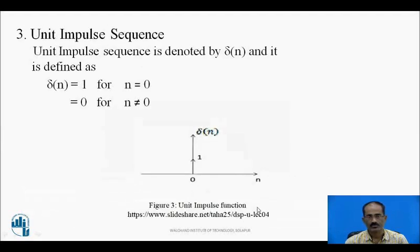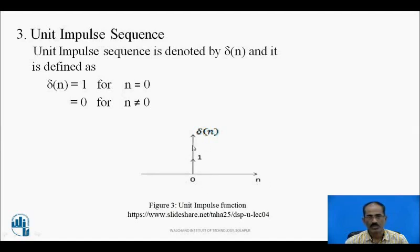Next is the unit impulse sequence. The unit impulse sequence is represented by δ(n). It is very simple: δ(n) exists only at n = 0; otherwise, its value is 0. Along the x-axis, n varies from -infinity to +infinity, and its value is 0 everywhere except at n = 0. This signal has many applications in digital signal processing.